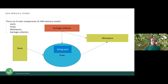The Java memory model consists of four major components: stack, heap, garbage collector, and metaspace. There is also a fifth sub-component — the string pool — but it is part of the heap.